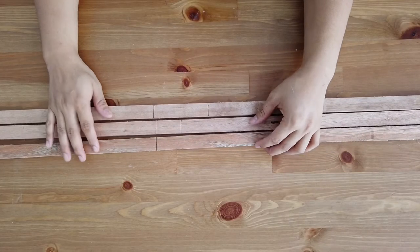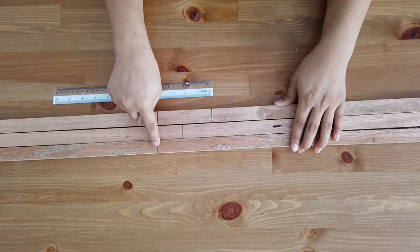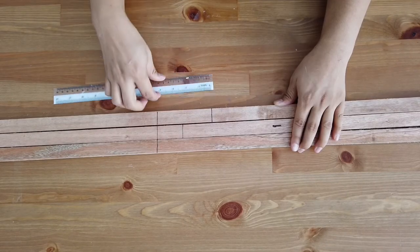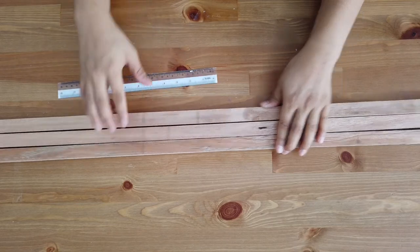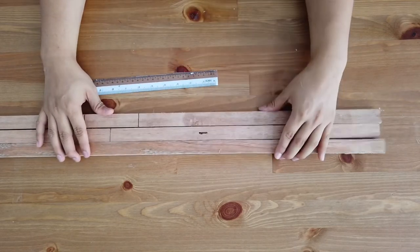All right, so first up, align all of the wooden sticks together. Over here you can see markings that I did, all one inch apart from each other, and you will see the result why. So now it's time to cut them.